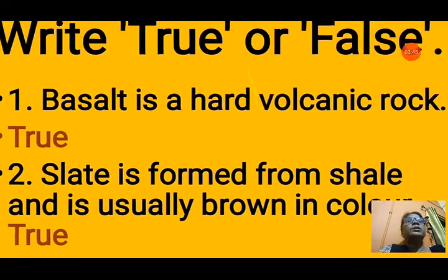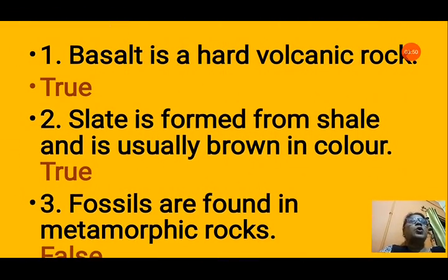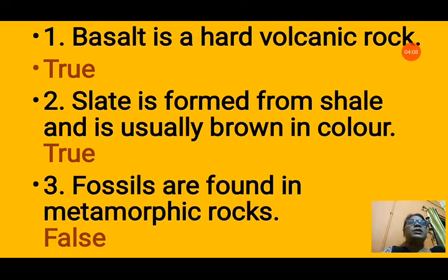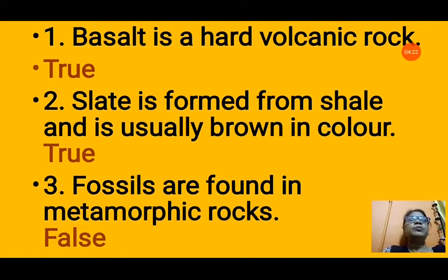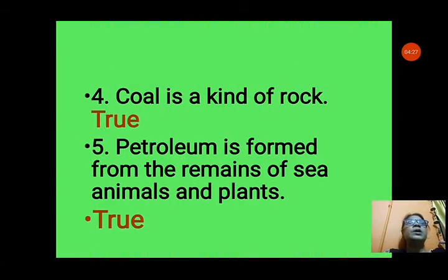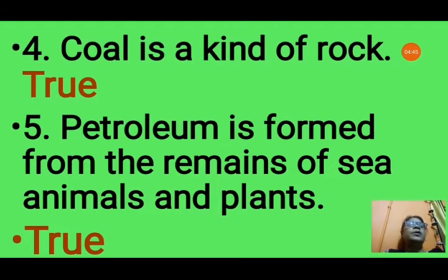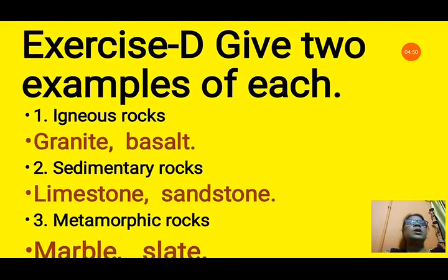Exercise C: Write true or false. Statement 1: Basalt is a hard volcanic rock — True. Statement 2: Slate is formed from shell and is really brown in color — True; slate forms from shell and comes in many colors including gray and brown. Statement 3: Fossils are found in metamorphic rocks — False; fossils are found in sedimentary rocks, where animals or plants are buried layer by layer in deposited sediments. Statement 4: Coal is a kind of rock — True; it is a sedimentary rock that splits into layers. Statement 5: Petroleum is formed from the remains of sea animals and plants — True.